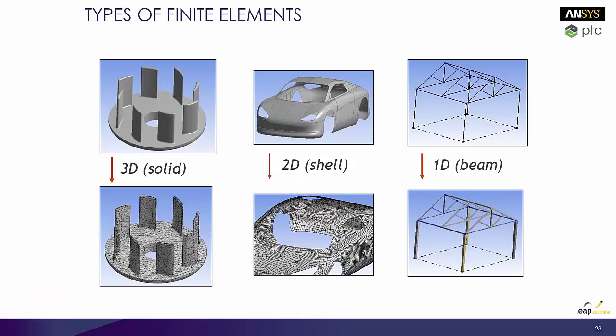So if this beam had an I-beam cross section, that would define its stiffness — just like when you have a surface, the thickness defines its stiffness. There's additional information you have to give to both the 2D shell and the 1D beam. Whereas when we have a 3D solid, you mesh it and that fully represents the stiffness and the geometry, so there's no additional information needed.